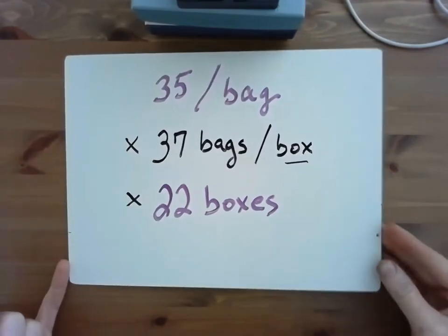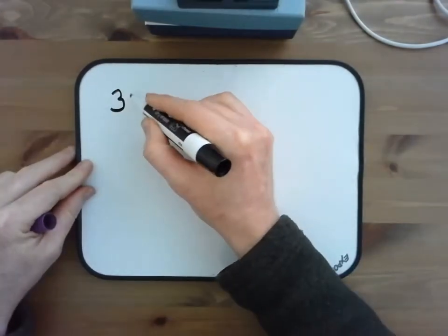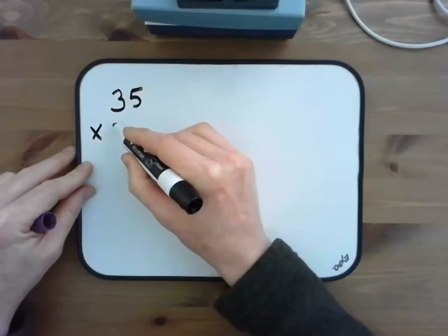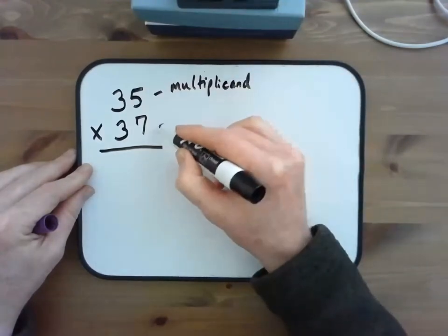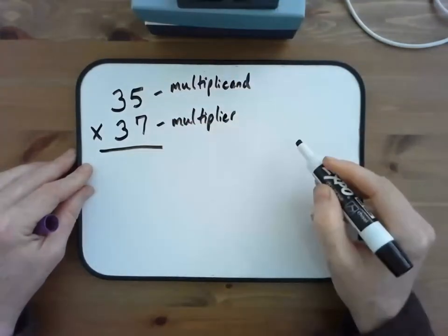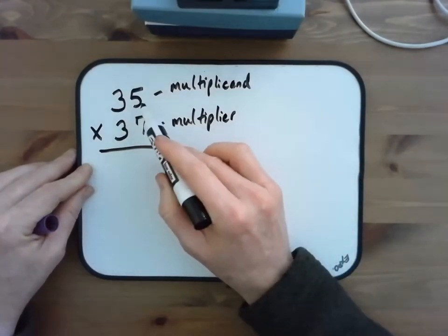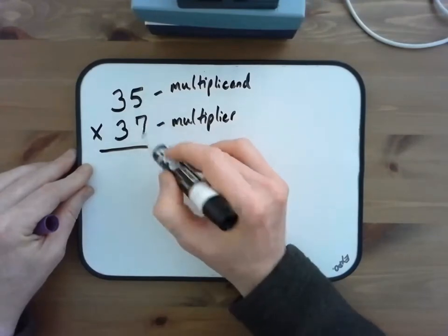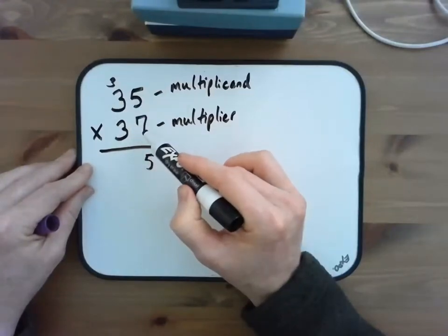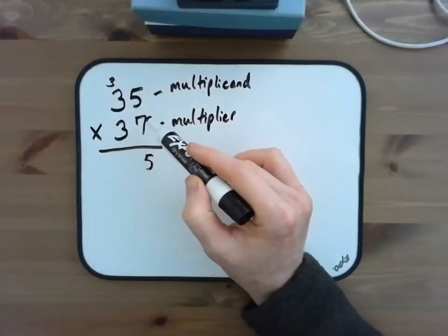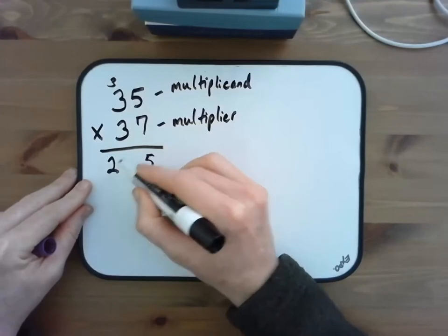I will show this in print first. My first problem is 35 times 37. The multiplicand is 35 and the multiplier is 37. So we'll multiply 35 by 7 first. 5 times 7 is 35. And then 30 times 7 is 210. Plus the 30 in 35, so that's 240.